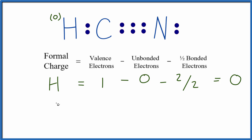Next, we'll do the carbon. Carbon is in group 14, sometimes called 4A. It has four valence electrons. Unbonded - all of these are involved in a bond between the carbon and nitrogen, and these are involved in a bond with the hydrogen, so we don't have any.